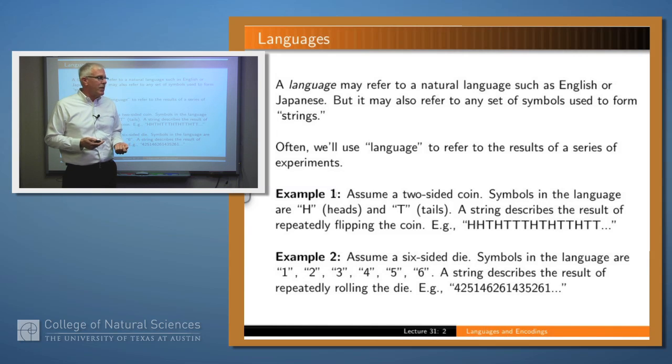So for example, suppose that you have a coin, a two-sided coin, and you flip it. What are the possible symbols that you might generate? Well, heads and tails, and you can represent those however you like, up and down, true or false, zero and one.